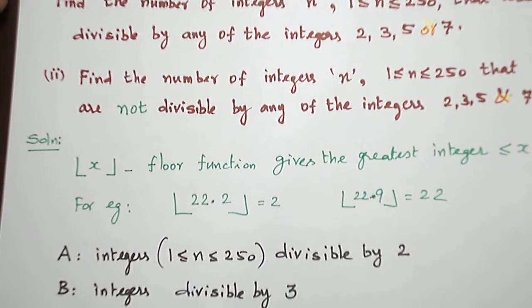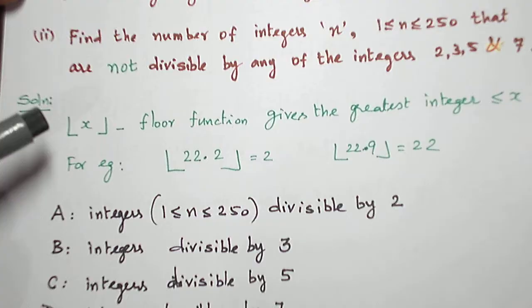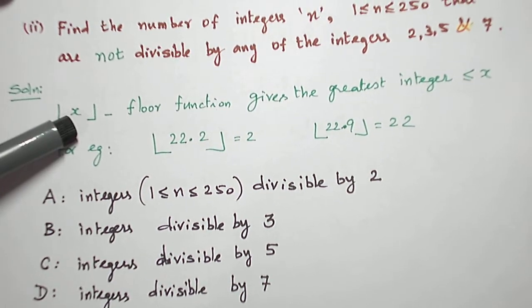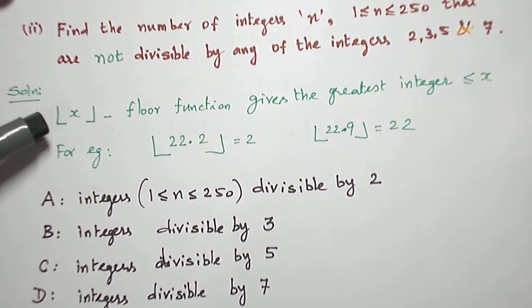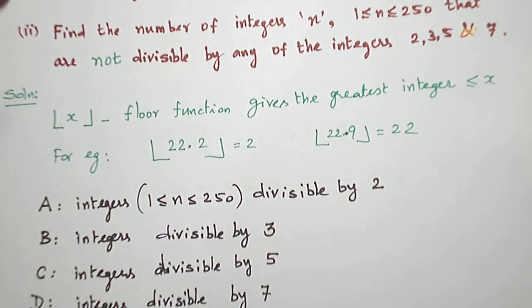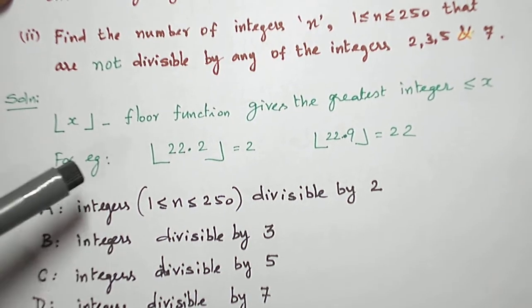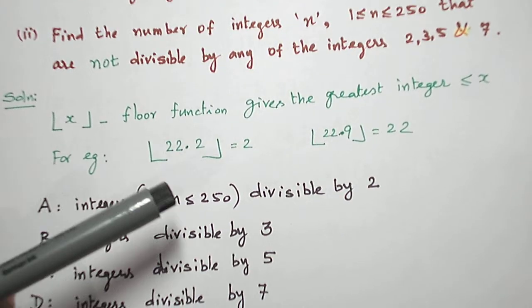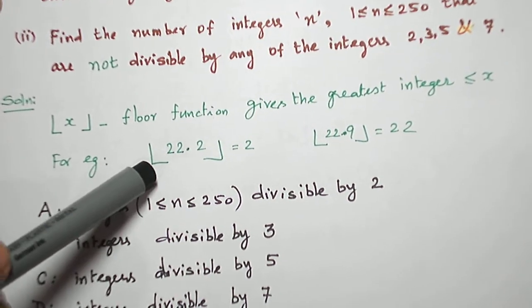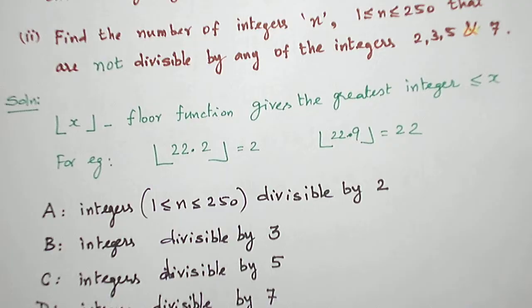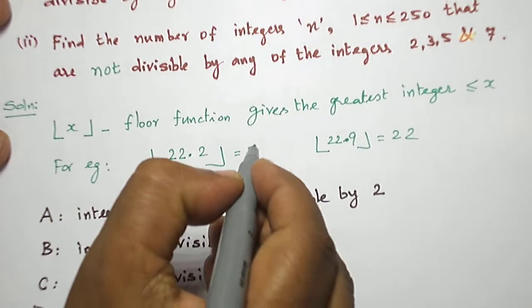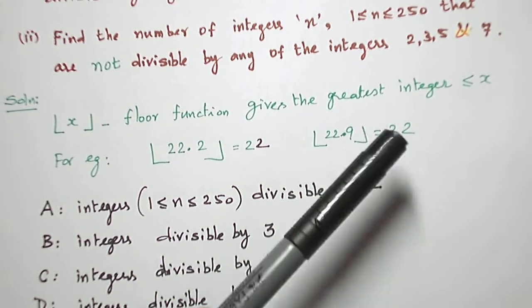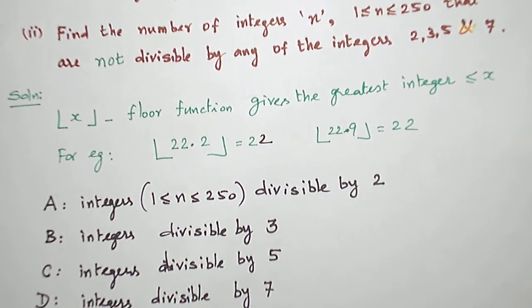Before starting the problem, first let me introduce the floor function of x. The floor function of x is the greatest integer that is less than or equal to x — essentially just neglecting the decimal part. So the floor function of 22.22 is 22, and the floor function of 22.9 is also 22.